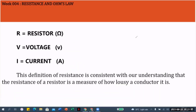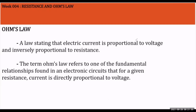Ohm's Law states that electric current is proportional to voltage and inversely proportional to resistance. There is a direct relationship between resistance, voltage, and current. Electric current is proportional to voltage and inversely proportional to resistance — that is correct. The term Ohm's Law refers to one of the fundamental relationships in electrical circuits.